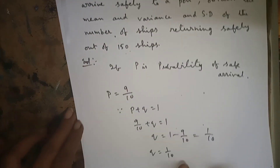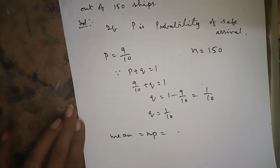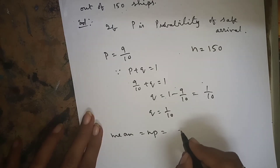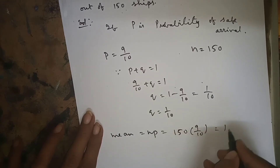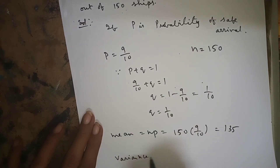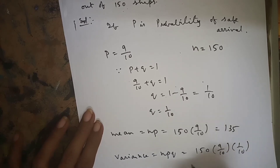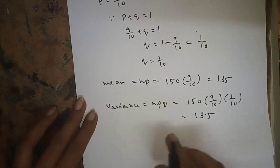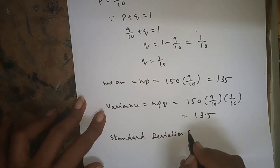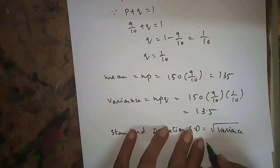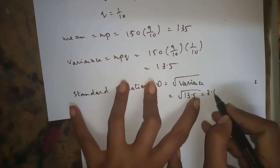With n = 150 ships, mean = np = 150 * 9/10 = 135. Variance = npq = 150 * 9/10 * 1/10 = 13.5. Standard deviation = sqrt(variance) = sqrt(13.5) = 3.674.